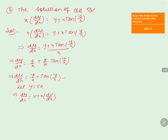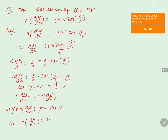Substituting into equation 1: v + x·(dv/dx) = y/x + tan(y/x). Since y/x = v, this becomes v + x·(dv/dx) = v + tan(v). The v terms cancel on both sides, giving x·(dv/dx) = tan(v). Now, sending these variables to the other side using the variables separable method.